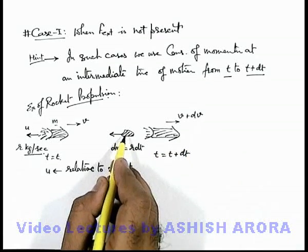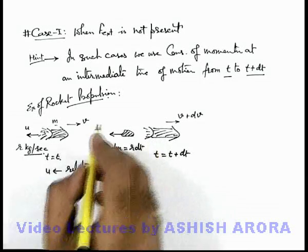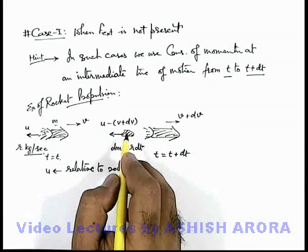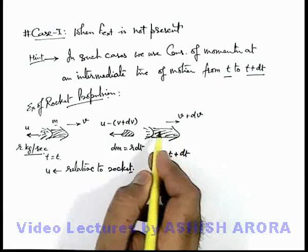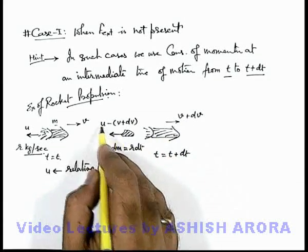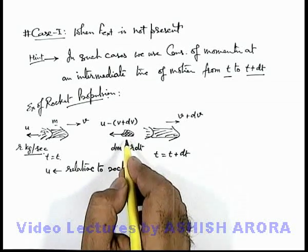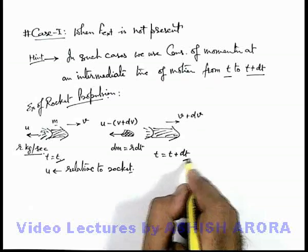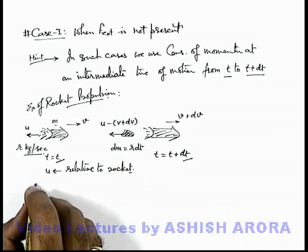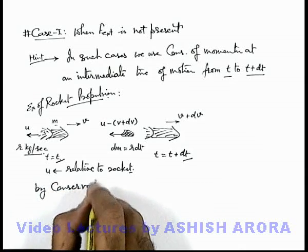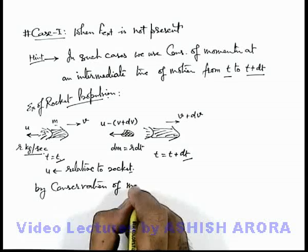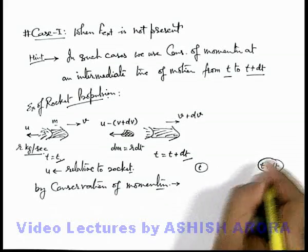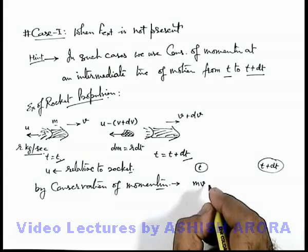As this lump of gases is ejected from the moving rocket, its velocity in the ground reference frame can be written as u minus (v plus dv), because it was ejected from a moving rocket. The gas has velocity v plus dv in the forward direction and is ejected at speed u backward from it, so its net velocity with respect to the ground will be given by this expression. Now from time t to t plus dt, no external force is acting, so by conservation of momentum: